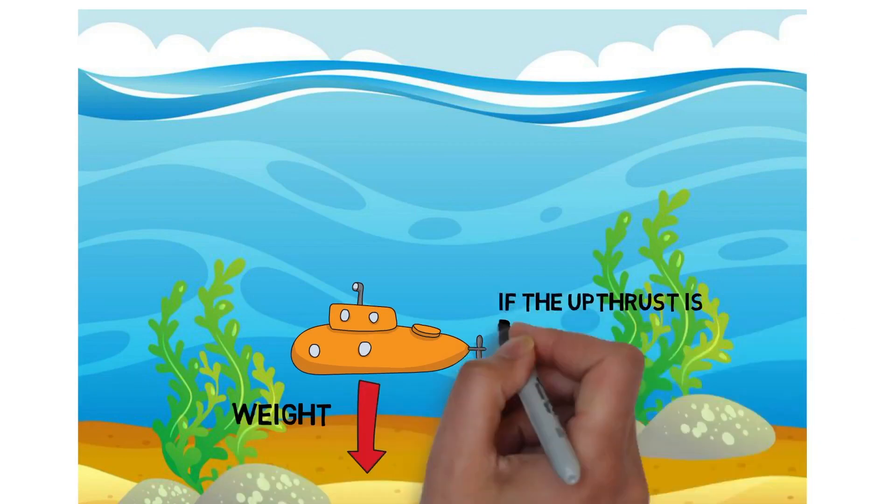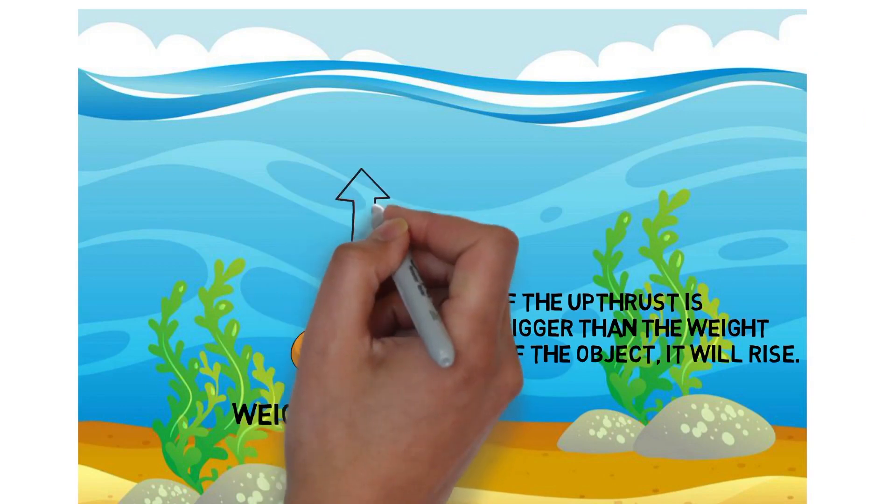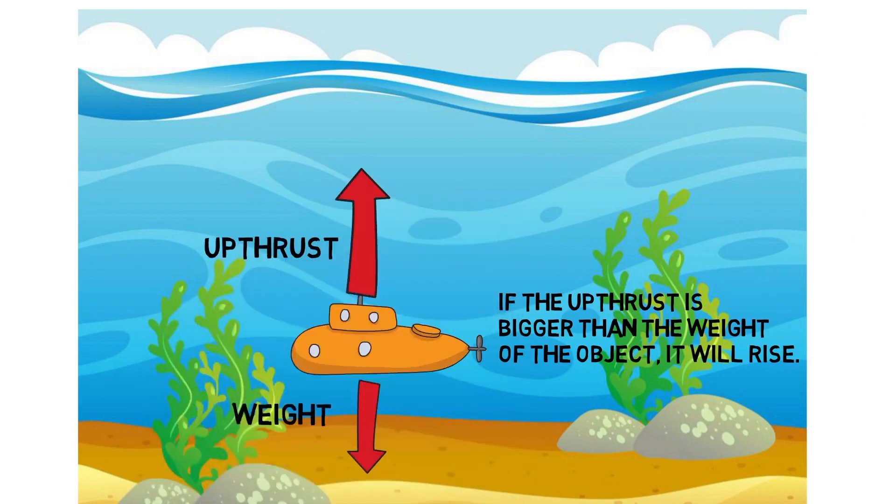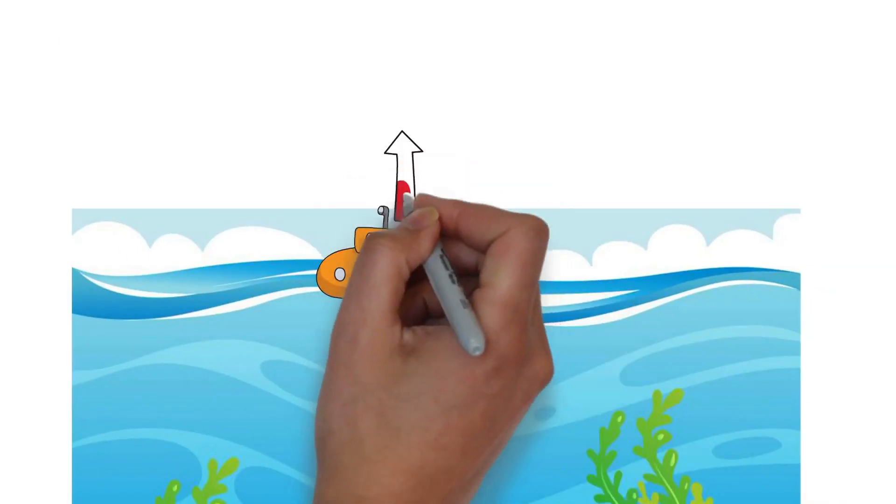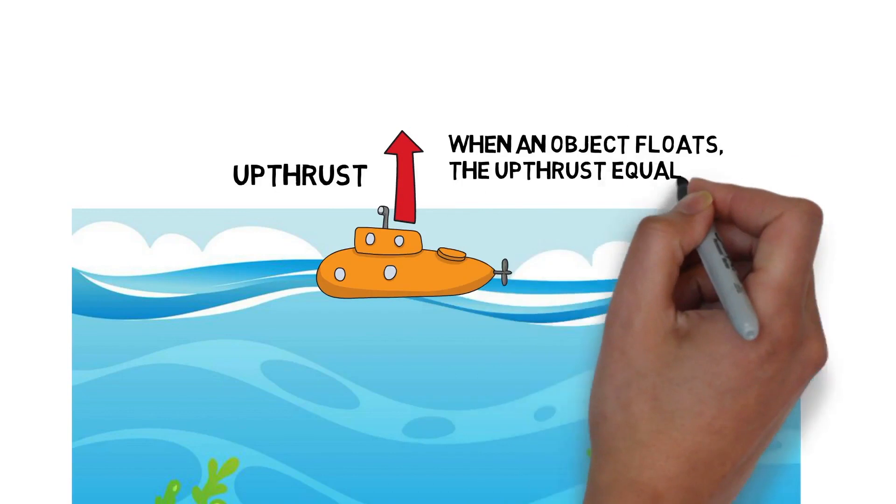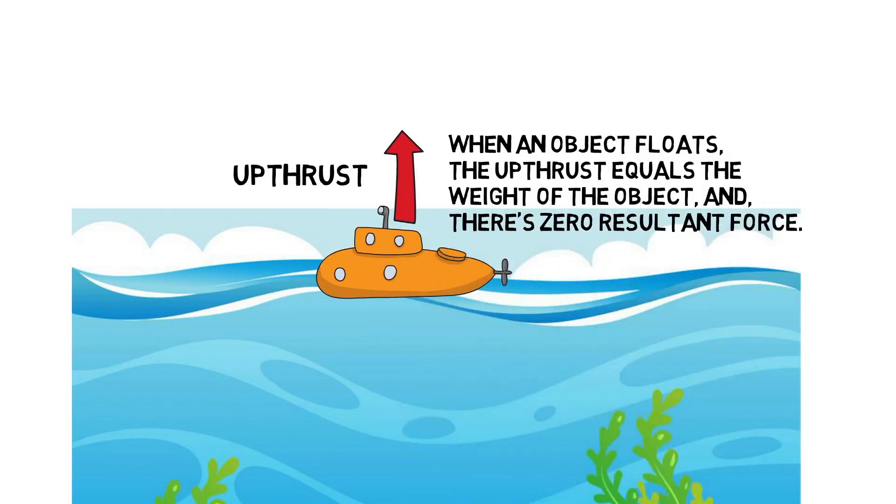If the upthrust is bigger than the weight of the object, it will rise. When an object floats, the upthrust equals the weight of the object and there's zero resultant force.